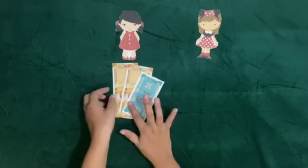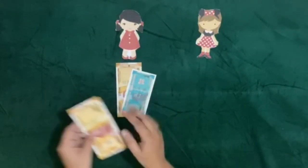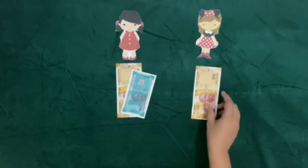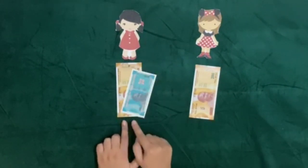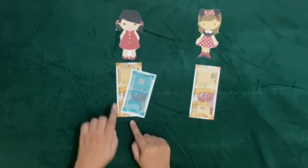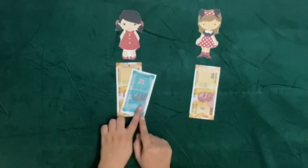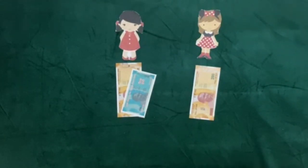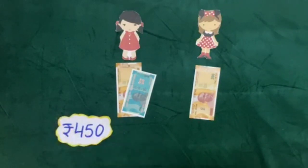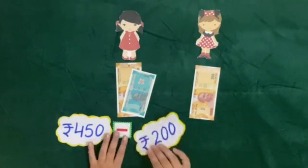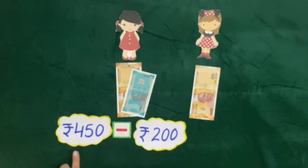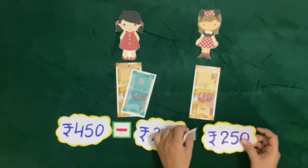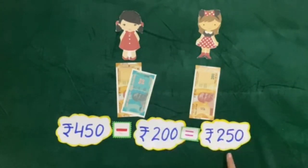Tanisha had rupees 450, out of which she gave 200 rupees to her sister Jyoti. So Tanisha is now having rupees 250. We have learned that if we subtract 200 from 450 rupees, then we will get rupees 250 as the answer.